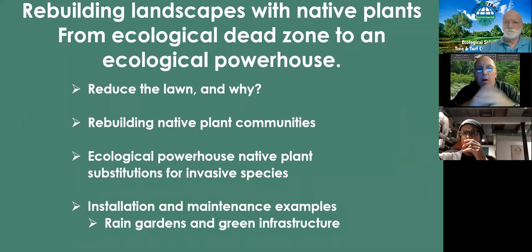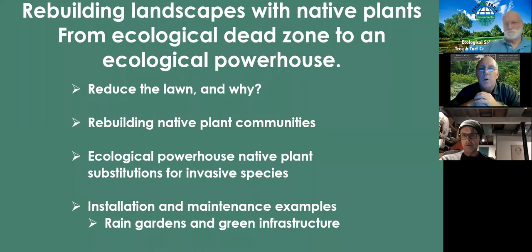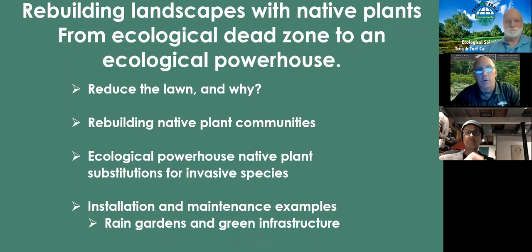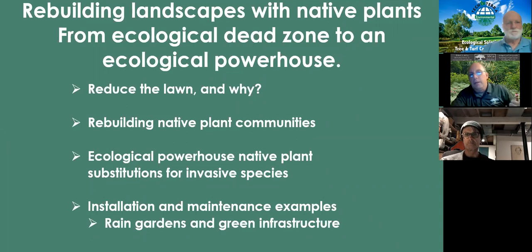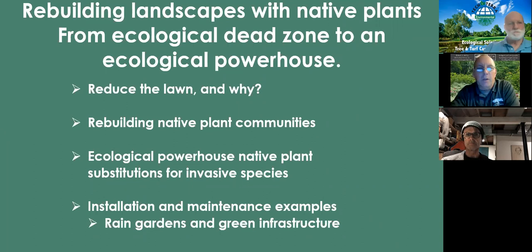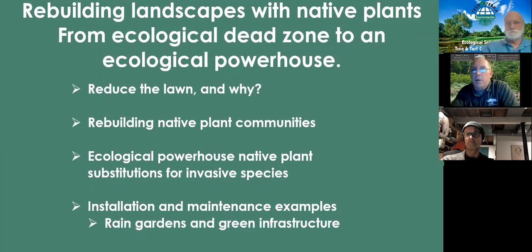Are lawns more problematic? Do you use a lot of leaves and gas to blow them off? We know that is a problem, and there are strategies to minimize gas-powered equipment — reducing the lawn is one. Obviously we're going to want to replace that with native plants. We're going to talk about rebuilding native plant communities. We've done a lot of damage to our ecosystems through loss of habitat and installing large home communities and parking lots.